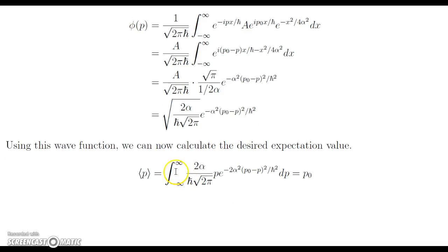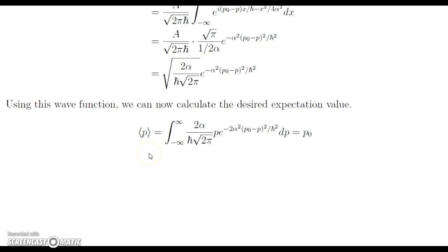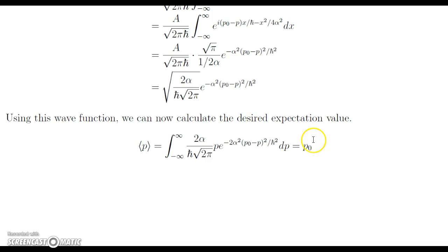We can now calculate the desired expectation value by plugging phi of p back into the original integral. It took a while to figure out how to integrate this; it seems possible by u-substitution, but I ended up plugging it into Mathematica, and it turns out this indeed evaluates to p₀. So we get the same expectation value as expected, and since the wave function is close to a Gaussian as noted in McIntyre, we did expect p₀ from this anyway.